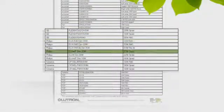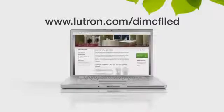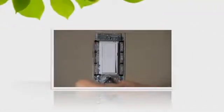First, make sure the bulbs you are pairing with your C.L dimmer are from our approved bulb list found on Lutron.com/dimCFLLED. Then install the dimmer, but do not attach the faceplate.